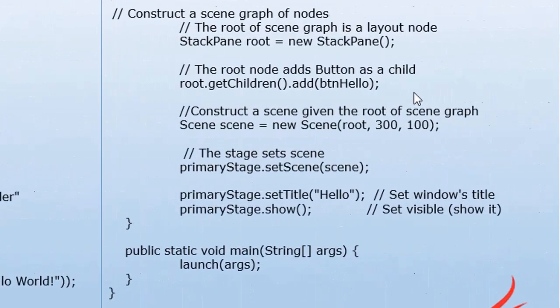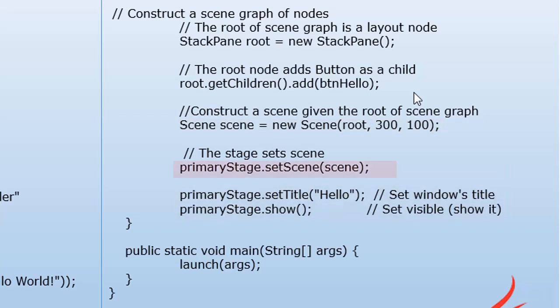We also construct a scene graph of nodes. We declare and instantiate StackPane — the name of that object is root. Then we add the button inside this root using root.getChildren().add() with btHello. We also construct a scene given the root of the scene graph: scene equals new Scene with root and window size 300 by 100. Then we set up our primary stage: setScene(scene), set the title to 'Hello', and display it with primaryStage.show().